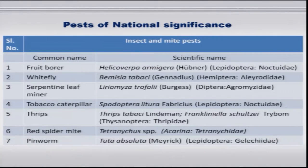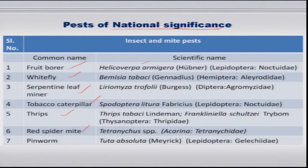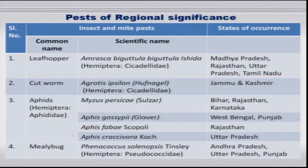The pests of national significance include fruit borers (Helicoverpa armigera), whitefly, serpentine leaf miner, tobacco caterpillar, thrips, mite pests like red spider mite, and the invasive pest pinworm. Regionally significant pests include some species of leafhoppers, cutworm, two or three species of aphids, and mealybug.